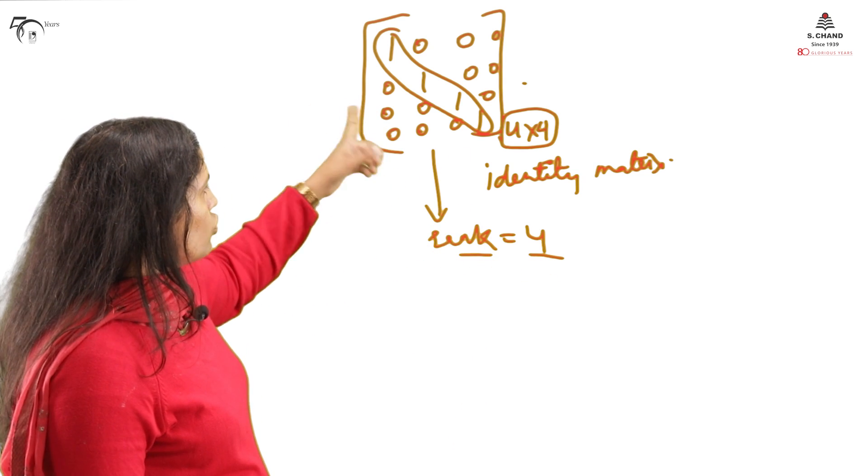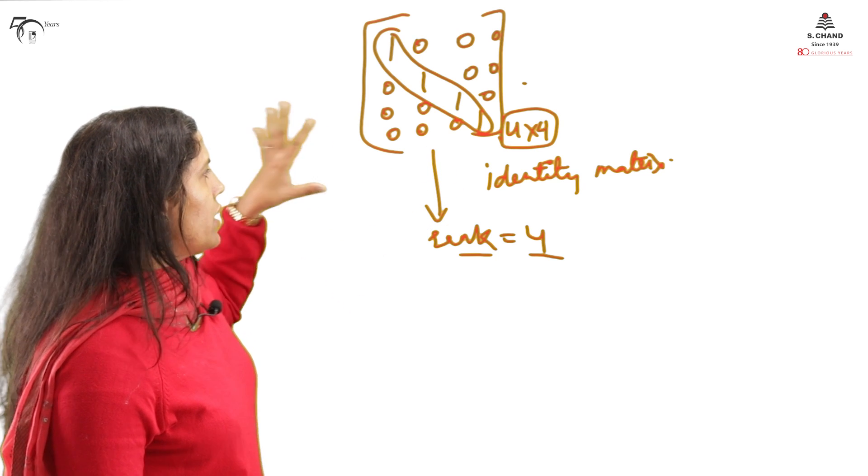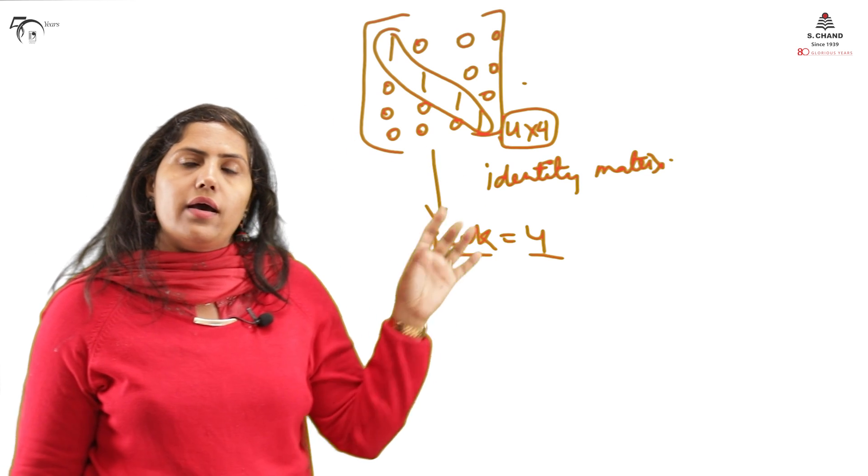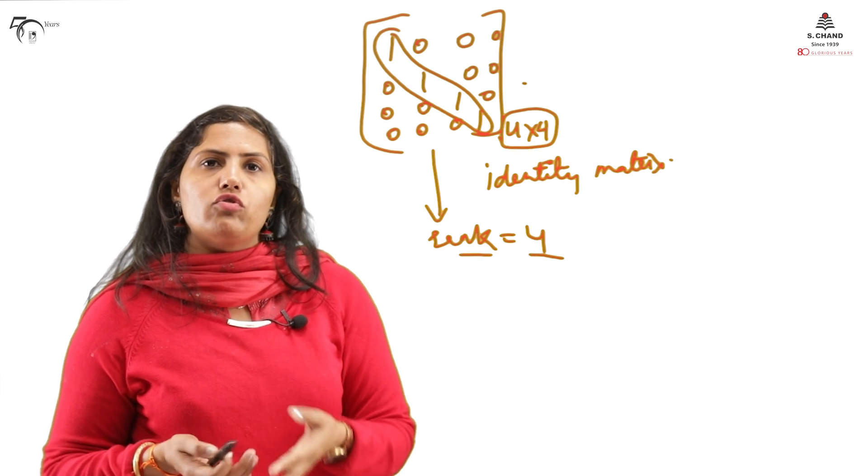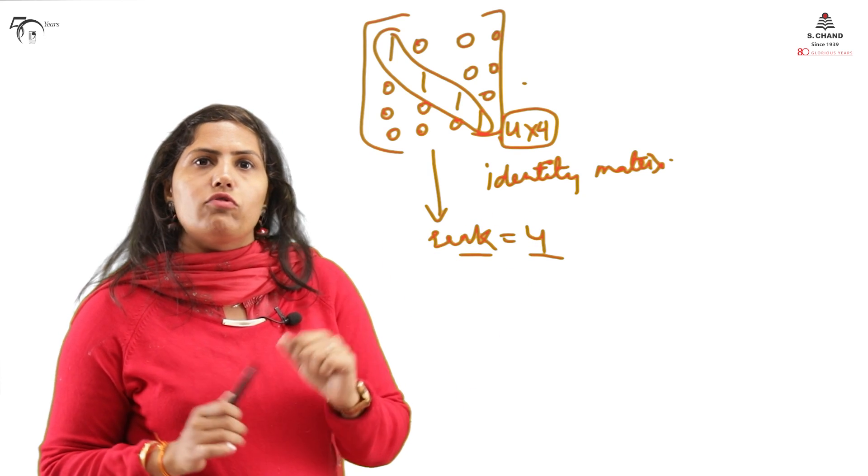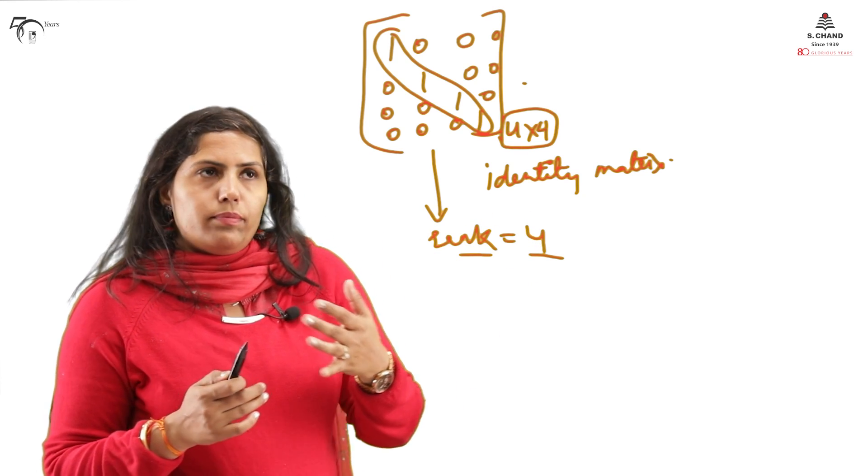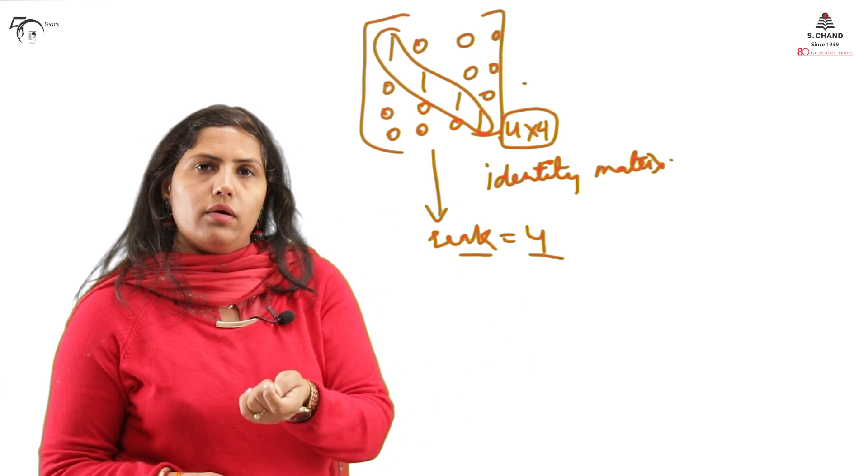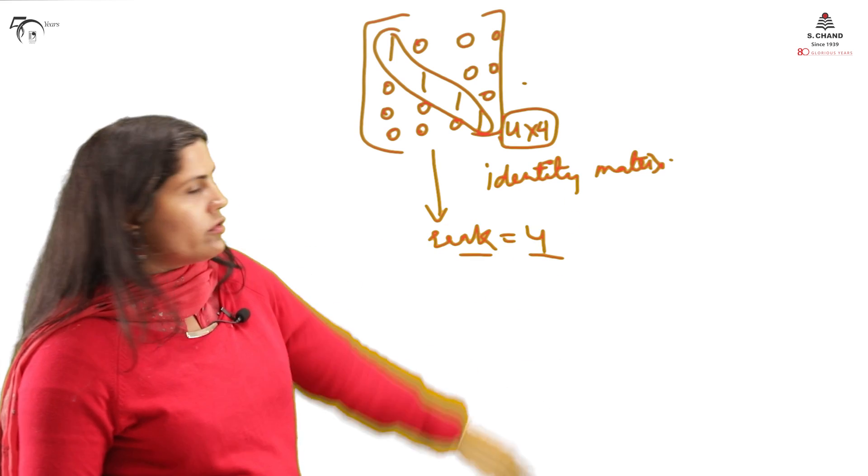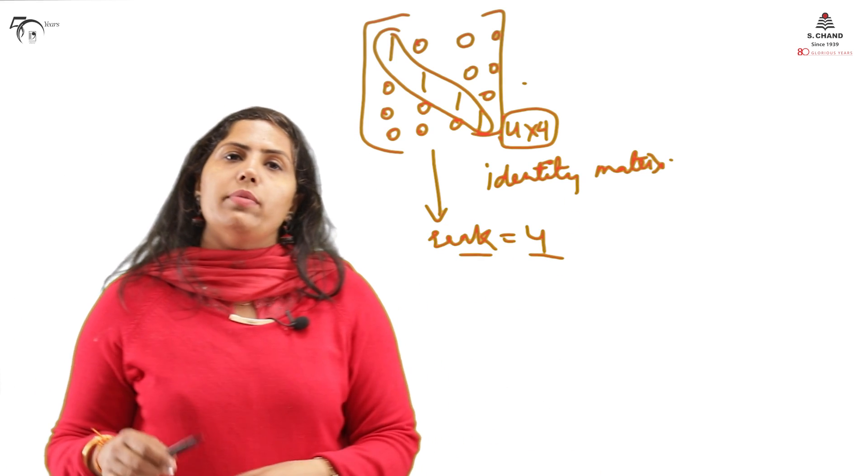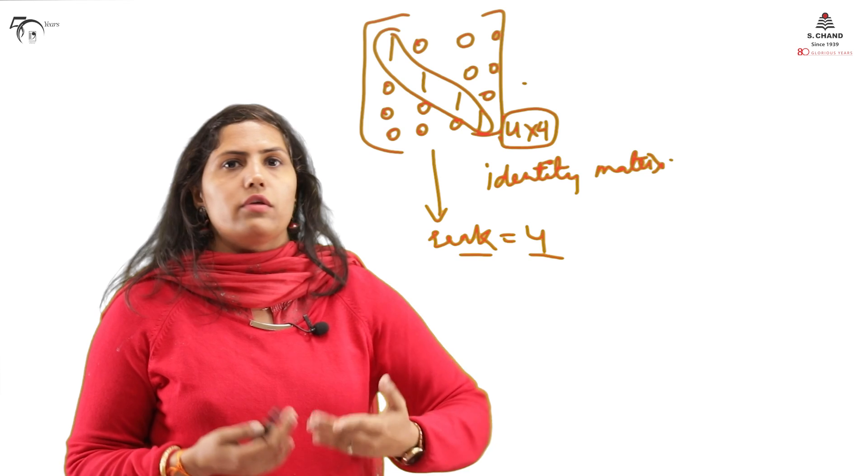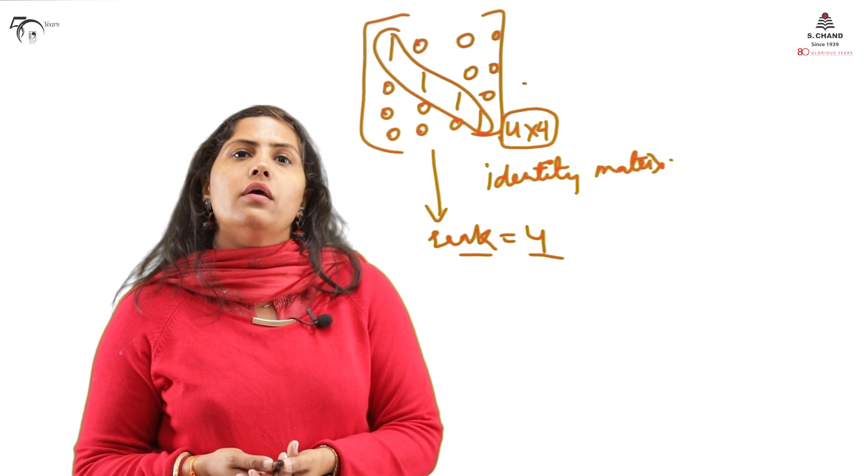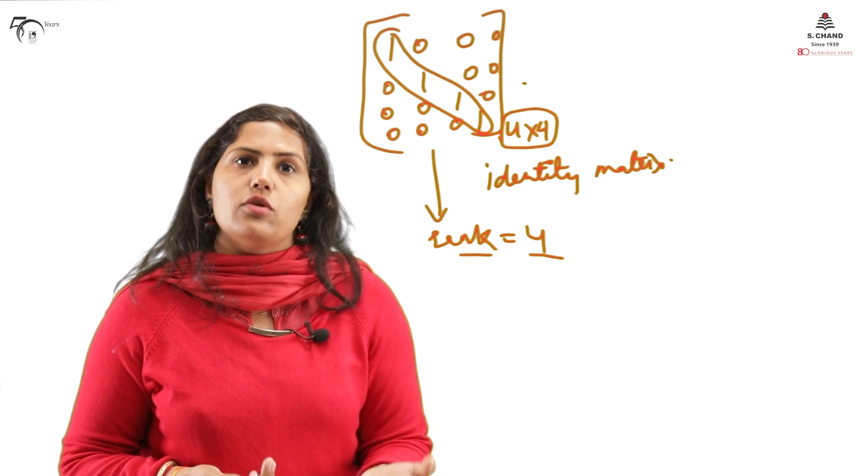These are the two matrices where we can generalize that this will be the rank. Rest you have to see, you have to apply the method. For identity and for 0 matrix you can be sure that the rank will be equal to the order. And for 0 there is no order condition, it will be 0 only.